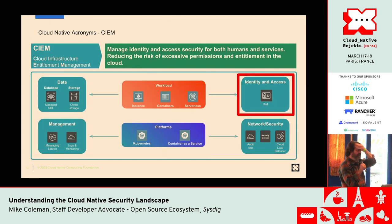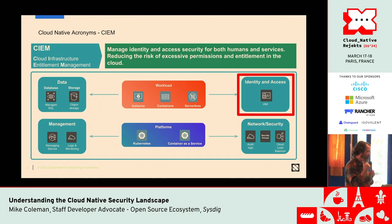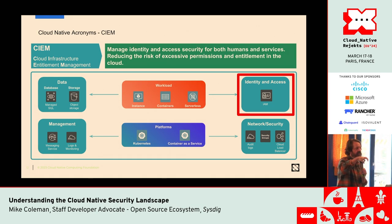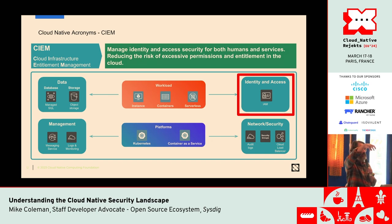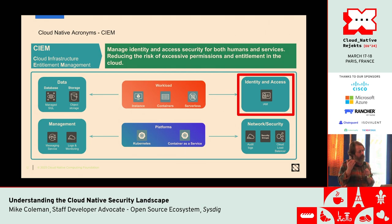The next area is Cloud Infrastructure Entitlement Management, or CIEM. This is all about IAM, access, and excessive permissions. I haven't found a lot of great open-source tools for this because so much of it is cloud-vendor dependent — it's different on AWS than it is on Azure. So from an open-source perspective, it's a little bit more difficult.